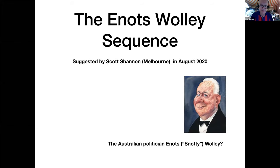The first one is the Enot-Wooley Sequence that was sent in by Scott Shannon, who lives in Melbourne, where I used to live. Enot-Wooley is a very Australian-sounding name. It could well be the name of a politician, for instance. That could be Enot known as Snotty Wally, but it's not. In fact, this is not named after an old geezer. It's named after a geyser.